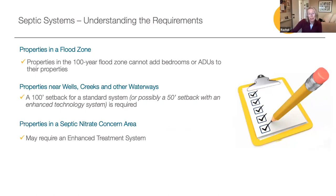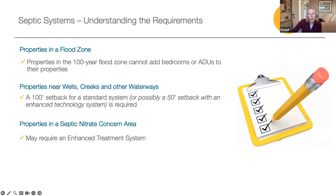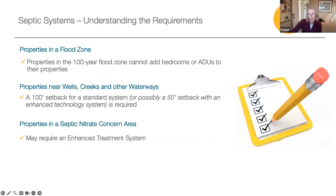Some other considerations: properties in the 100-year flood zone cannot add bedrooms or ADUs. Properties near wells, creeks, and other waterways require a 100-foot setback, but enhanced technology systems can be used to reduce that setback, possibly in half. And properties in the septic nitrate concern area may require an enhanced treatment system. These are all site conditions you can research using the GIS interactive mapping system — we really encourage you to get in there and start exploring.